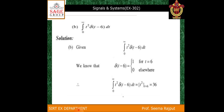Another example is the integration from 0 to infinity of t squared times δ(t−6) dt. Here, δ(t−6) equals 1 for t equal to 6 and 0 elsewhere. Replacing δ(t−6) with 1, the remaining function is t squared. Putting t equal to 6, the answer is 36.